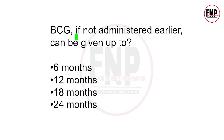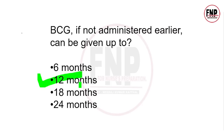Next question: BCG vaccine if not administered at birth, can be given up to which age? Options: 6 months, 12 months, 18 months, 24 months. The right answer is option B, 12 months. BCG vaccine bachche ko TB disease se protect karta hai; Bacillus Calmette-Guérin iski full form hai. Agar janm ke turant baad nahi lagaya gaya to ise ek saal tak lagaya ja sakta hai; uske baad generally nahi lagaya jata.